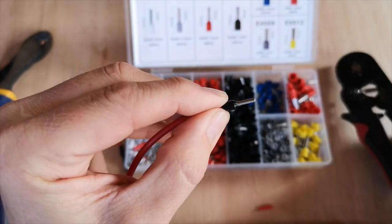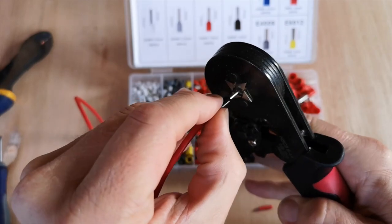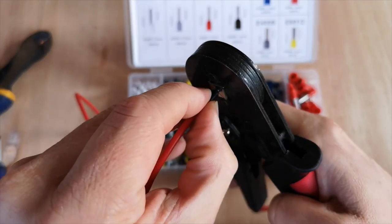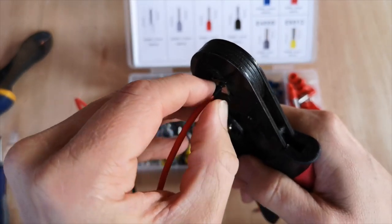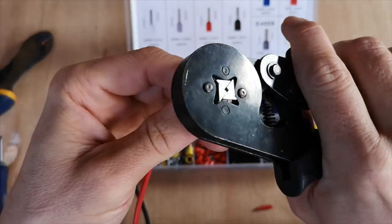Now we're happy with that, we can take our ferrule crimping tool. Insert the ferrule with the cable, squeeze down and reshape the ferrule crimp.